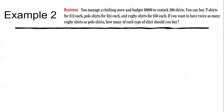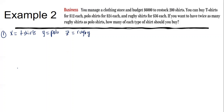Now a word problem. You manage a clothing store and budget $6,000 to restock 200 shirts. You can buy t-shirts for $12 each, polo shirts for $24 each, and rugby shirts for $36 each. If you want twice as many rugby shirts as polo shirts, how many of each should you buy? Step one: establish variables — let x = t-shirts, y = polo shirts, z = rugby shirts.